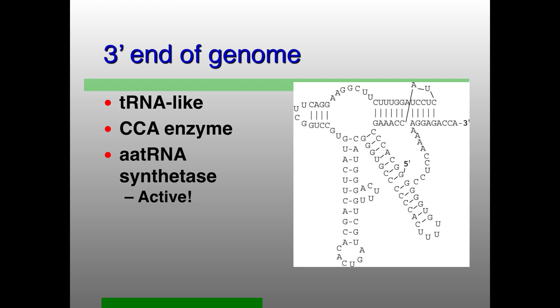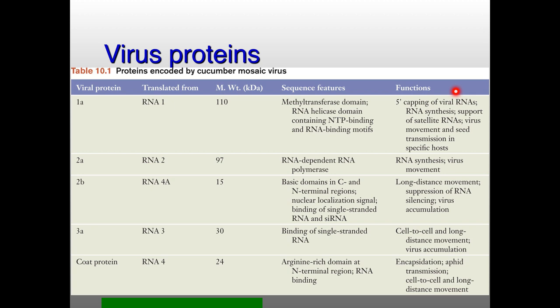The tRNA-like structure may help bring the ribosome to these RNAs and allow them to be translated. As a reminder, the methyl transferase domain — important for making 5-prime caps — and the movement proteins are ones more specific to plant viruses. There are also a number of other viral proteins involved in making caps that bear repeating.